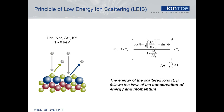The physics behind ion scattering is simple — it's just classical mechanics of spheres colliding. The interaction is so short that in principle only the projectile and the surface atom are involved. The energy of the scattered ion after the collision is given by the formula shown, and once the scattering angle, primary energy, and final energy are known, the mass of the scattering atom can be calculated.